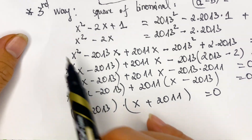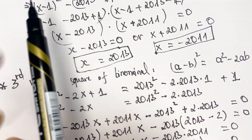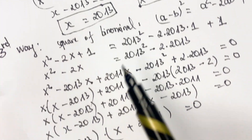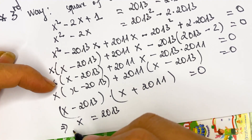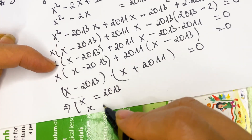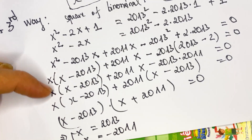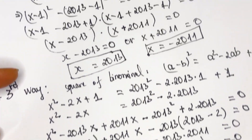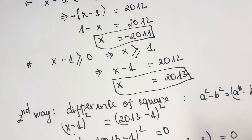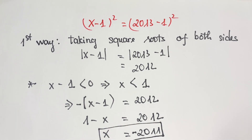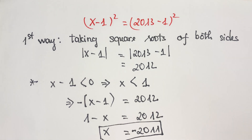For the third way we get the same result as the second way: x equals 2013 or x equals minus 2011. All three methods give the same values of x. Thank you for watching my video, don't forget to subscribe to my channel. Love you all, bye!